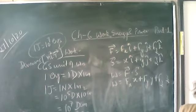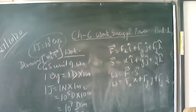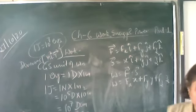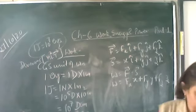Work is a scalar quantity, it is the dot product of force and displacement. The dimensional formula is M L squared T to the power minus 2. The SI unit is Joule and the CGS unit is erg, where 1 Joule equals 10 to the power 7 ergs.